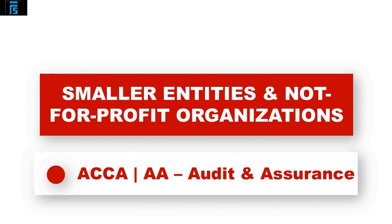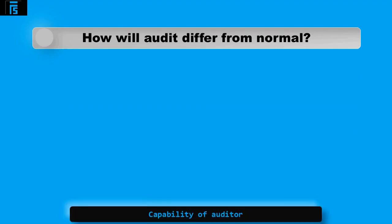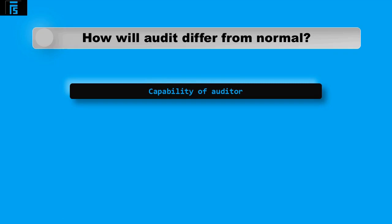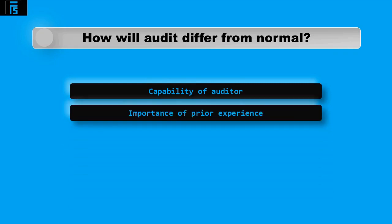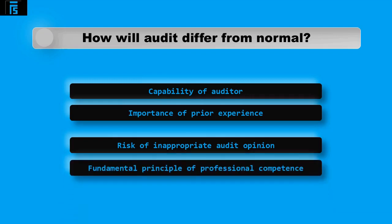This video will cover the audit of smaller entities and not-for-profit organisations (NFPs), identifying how the audit would differ when reviewing these entities' financial statements. Auditors must be capable of auditing the entity under review. Having experience in auditing a smaller entity or a not-for-profit such as a charity is important — if they miss something, they may issue an inappropriate opinion. The ethical code states that one of the fundamental principles is professional competence.